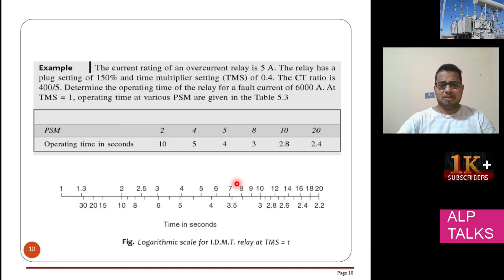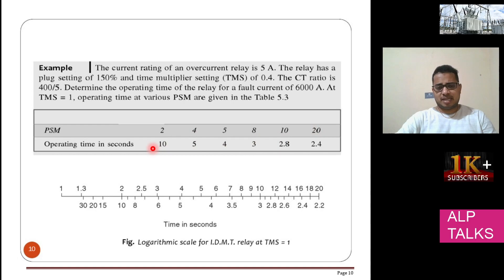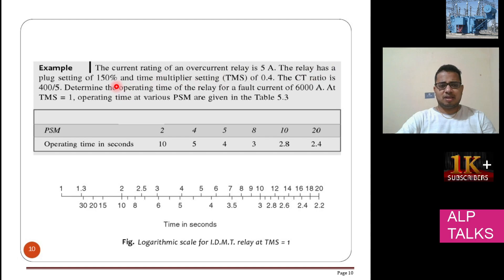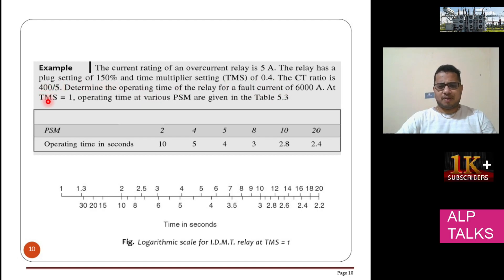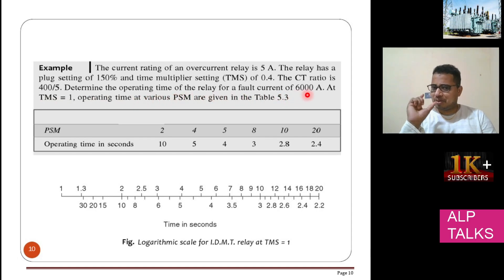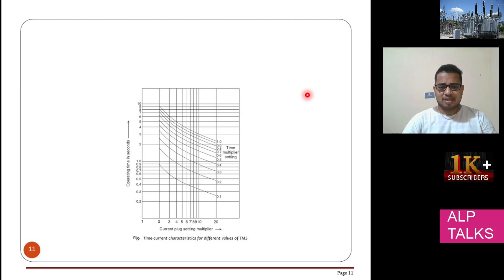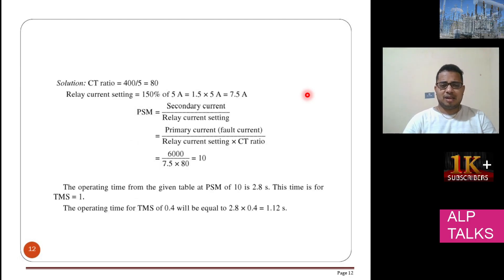Here is one example: the relay has a plug setting of 150% and a time setting of 0.4. We are using a CT of 400/5 amp. We need to determine the operating time of the relay for a fault current of 6000 amps. The CT ratio is 80, and 150% of 5 amps is 1.5 × 5 = 7.5 amps. So PSM = 6000 / (7.5 × 80) = 10. From the table, for PSM of 10, the operating time at TMS = 1 is 2.8 seconds.